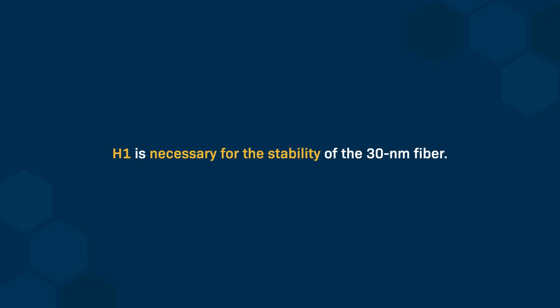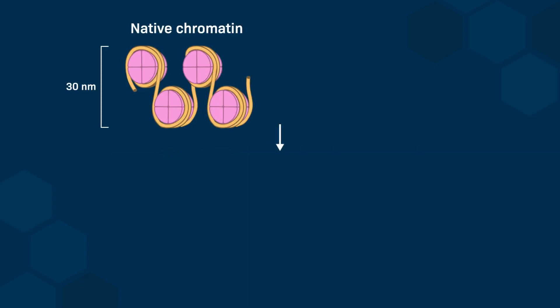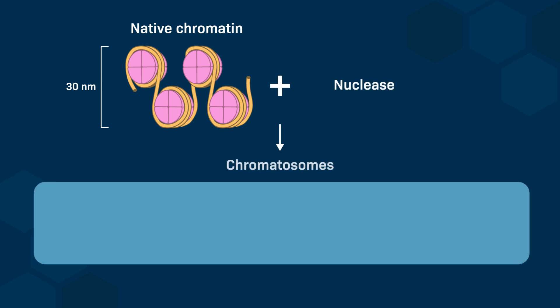A second experimental observation is that the digestion of the native 30 nm chromatin fiber with a nuclease releases fundamental units called chromatosomes. These units contain histones H2A, H2B, H3, H4, and DNA. The size of the DNA fragment that is protected from the nuclease by these five proteins is 166 base pairs.